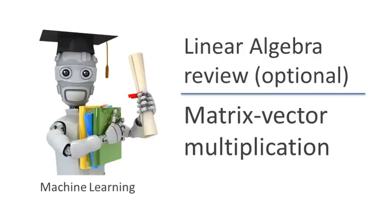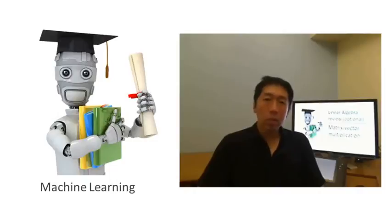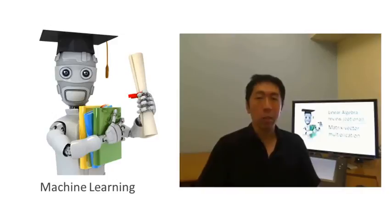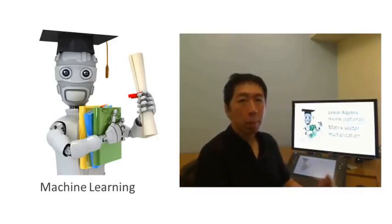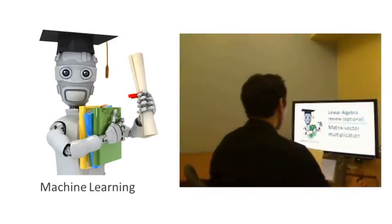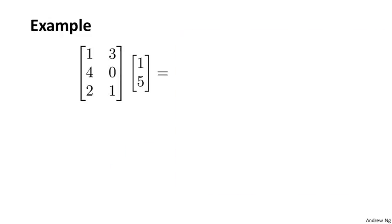In this video, I'd like to start talking about how to multiply together two matrices. We'll start with a special case of that — matrix-vector multiplication, of multiplying a matrix together with a vector. Let's start with an example. Here's a matrix and here's a vector, and let's say we want to multiply together this matrix with this vector.